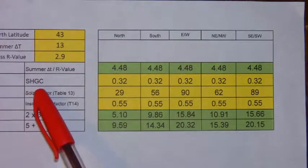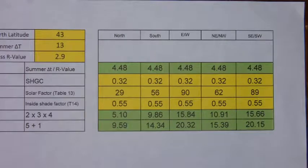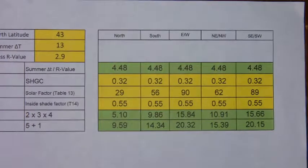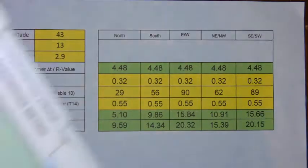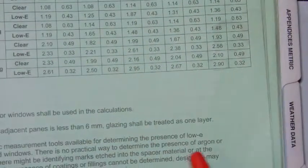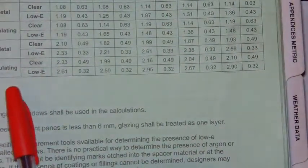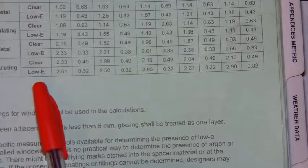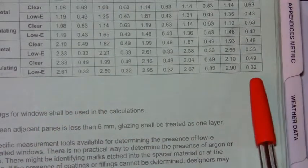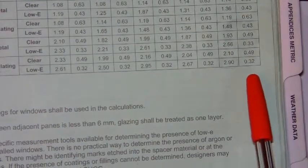The solar heat gain coefficient comes from your HRAI manual, and depending on the type of glass you have, you would have a solar heat gain factor. In our example, we had an operable wood vinyl with insulating low E, and we used a factor of 0.32.